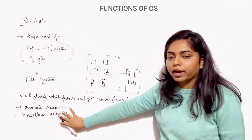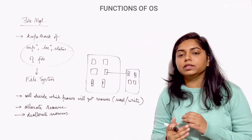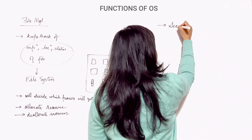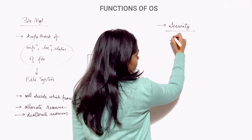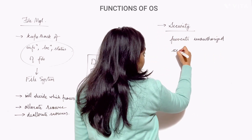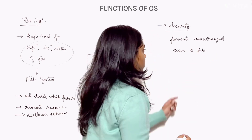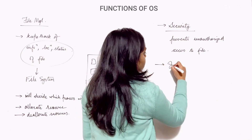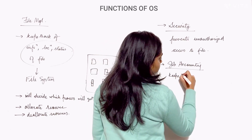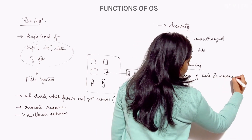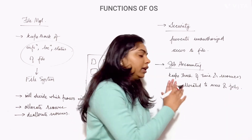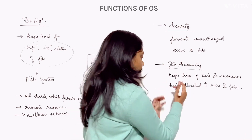Until now we have discussed four functions of operating system: memory management, file management, processor management, and device management. Apart from these, there are several other functions. First is security — OS provides security by preventing unauthorized access to files. Second is job accounting — OS keeps track of time and resources allocated to users and various jobs.